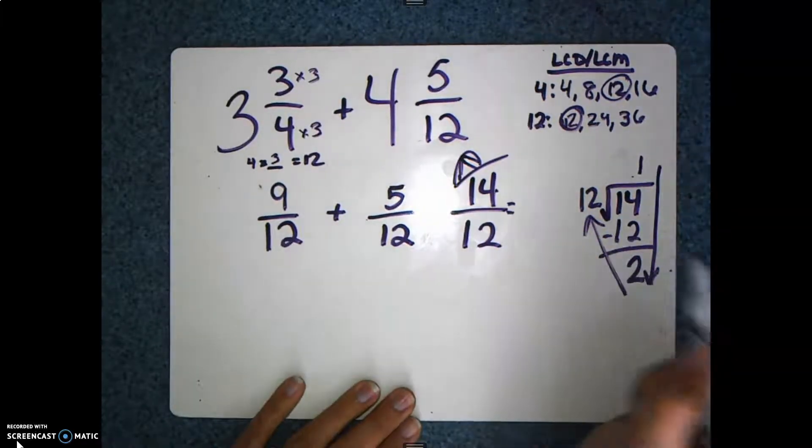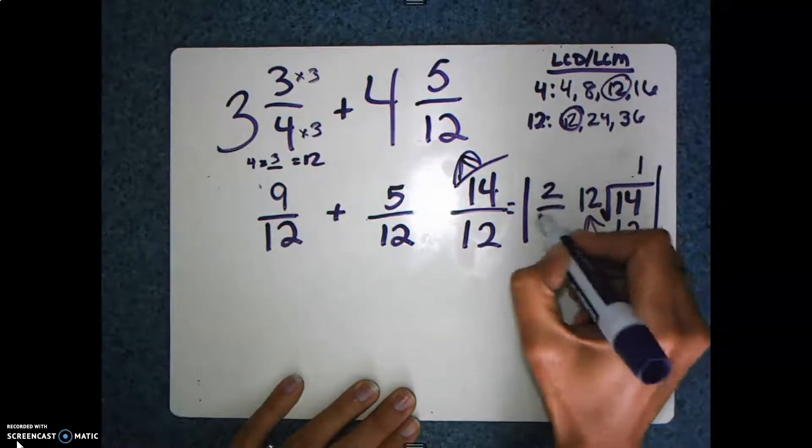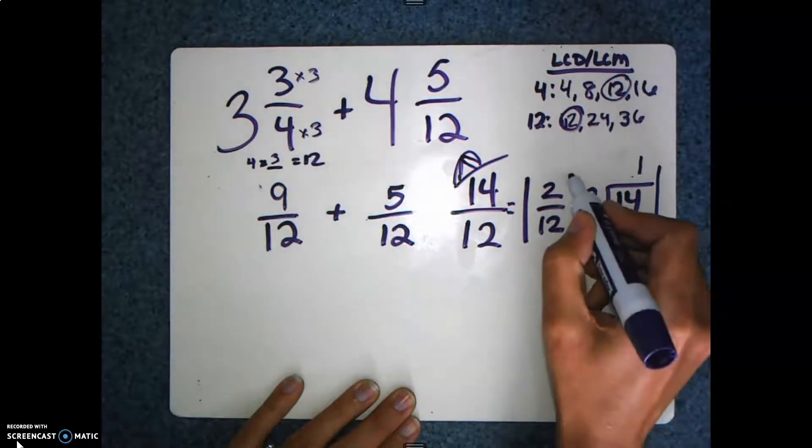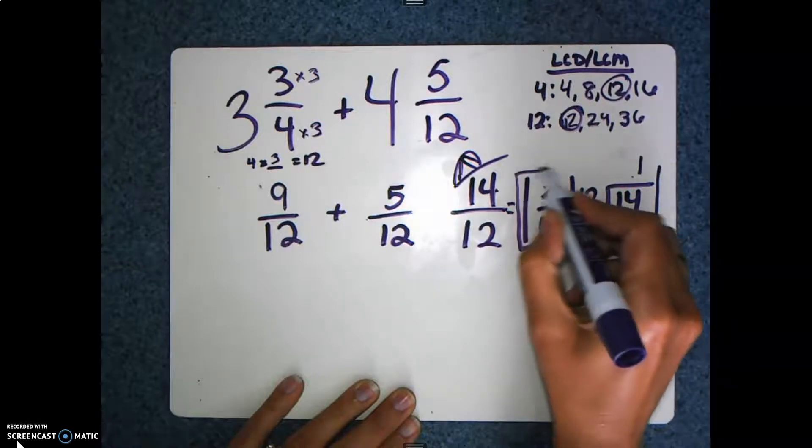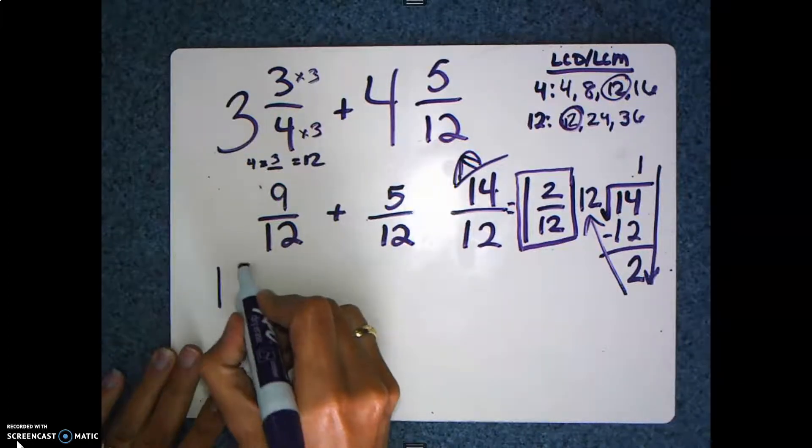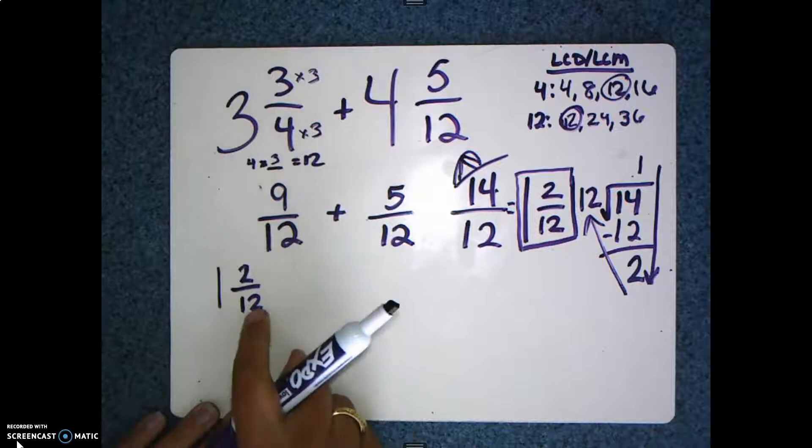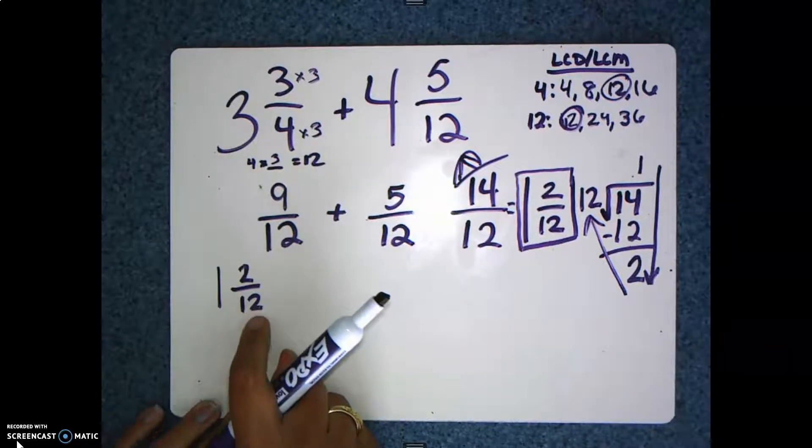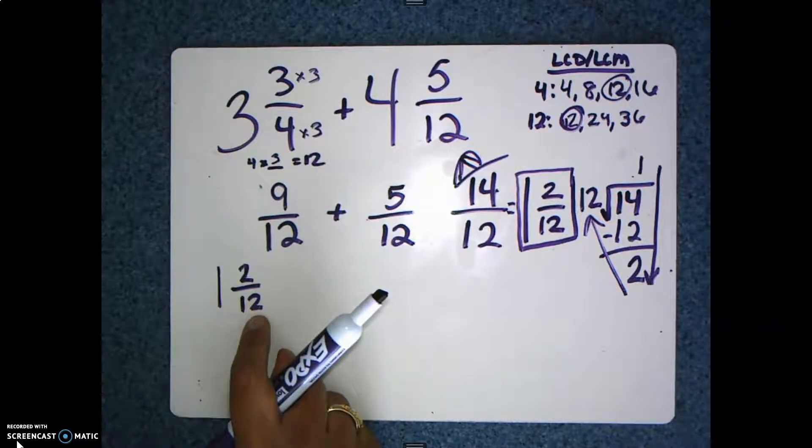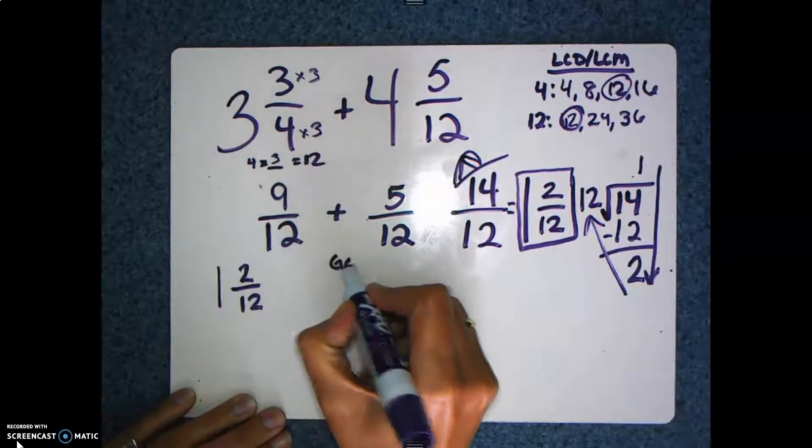So my mixed number for this fraction is actually 1²⁄₁₂. Now I'm going to pull this mixed number out and I'm going to put it down here. Because as I look at this fraction and this mixed number, I can tell that this ²⁄₁₂ can be simplified even further. So this is where we look at our greatest common factor.